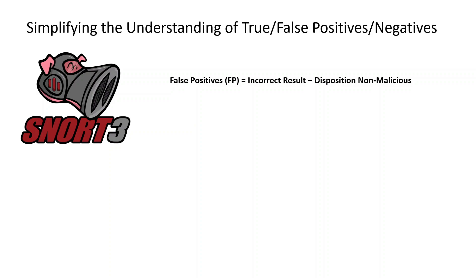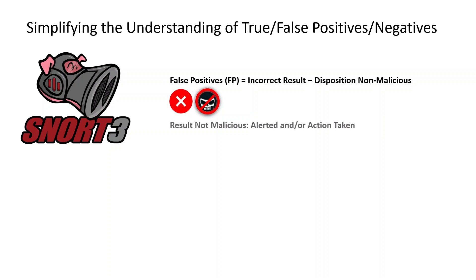With a false positive, something has been identified as malicious and an alert and action was taken — but this is not the intended purpose. This may cause disruption in the organization because it's falsely blocking or alerting on things that it shouldn't be.